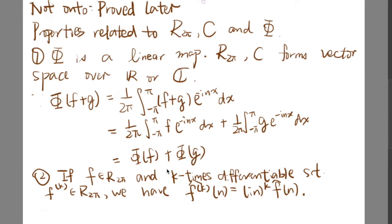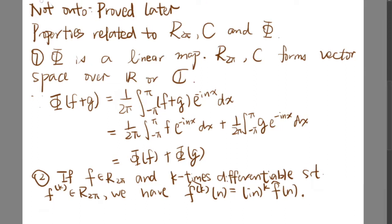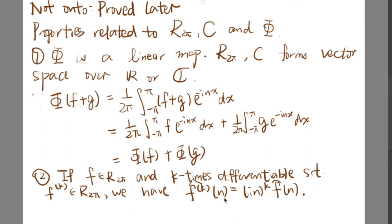Also, second, if f is inside R2π and is k times differentiable such that the kth derivative of f lies inside R2π, then we have f̂^(k)(n) equals (in)^k times f̂(n). I will leave the proof in the next video.